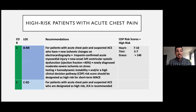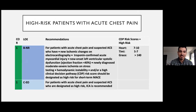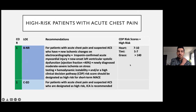If you see a patient you deem to be high risk with acute chest pain, that is an admission to cardiology or an inpatient service, likely for invasive coronary angiography as the next step. CDP risk scores that classify someone as high risk include a HEART score of 7 to 10, GRACE score greater than 140, and TIMI score of 5 to 7.